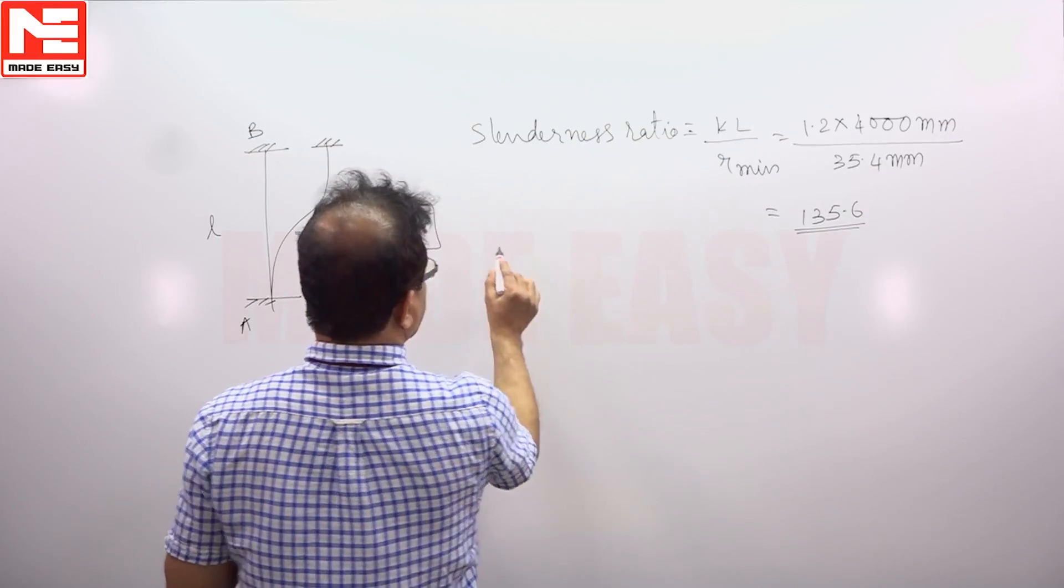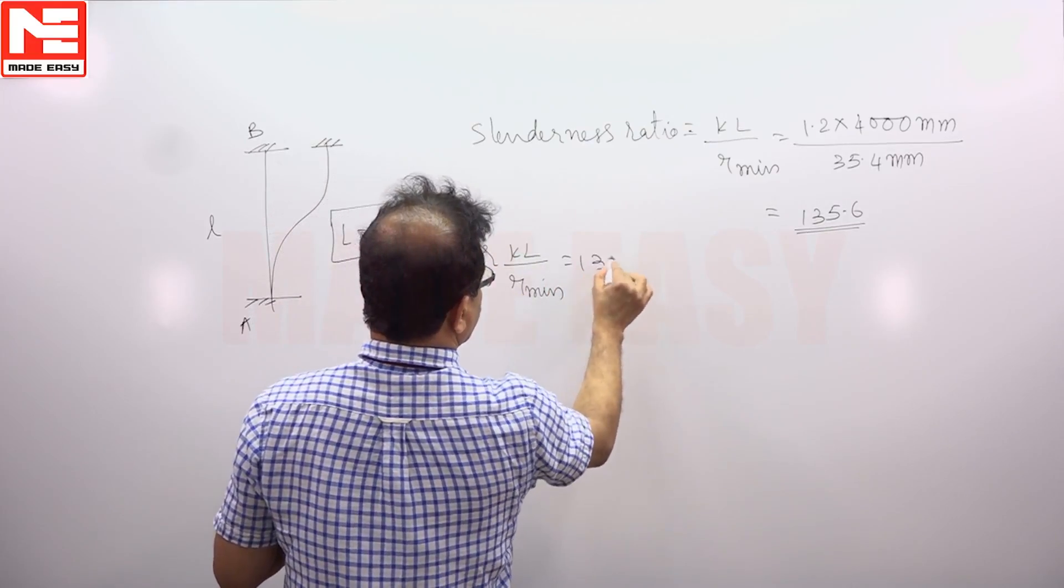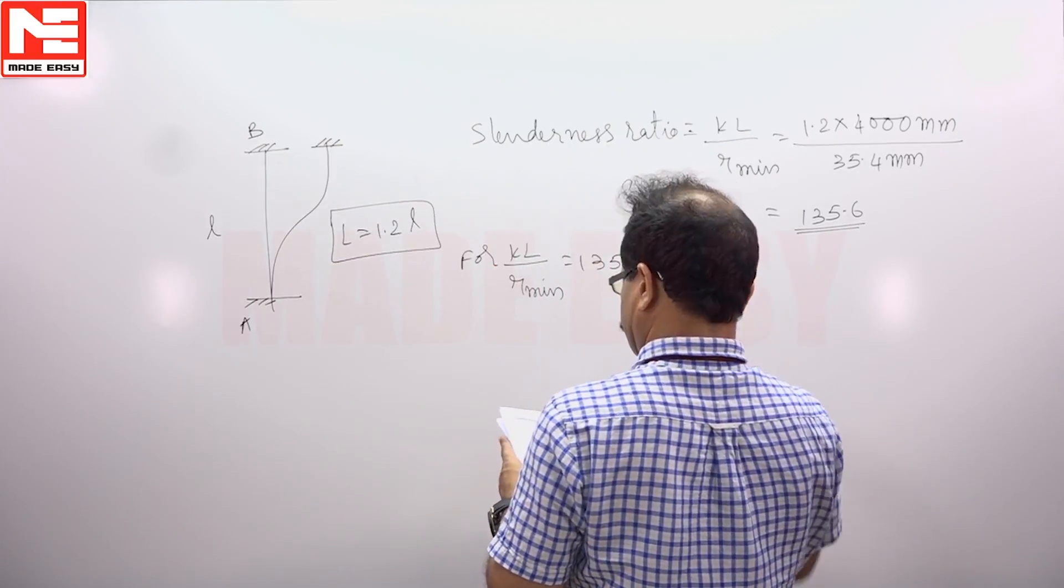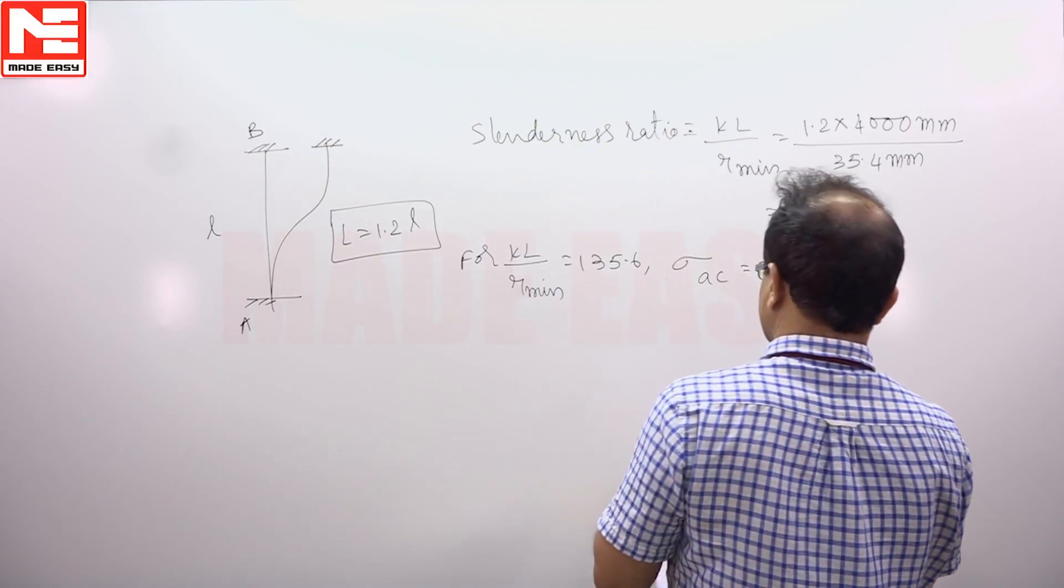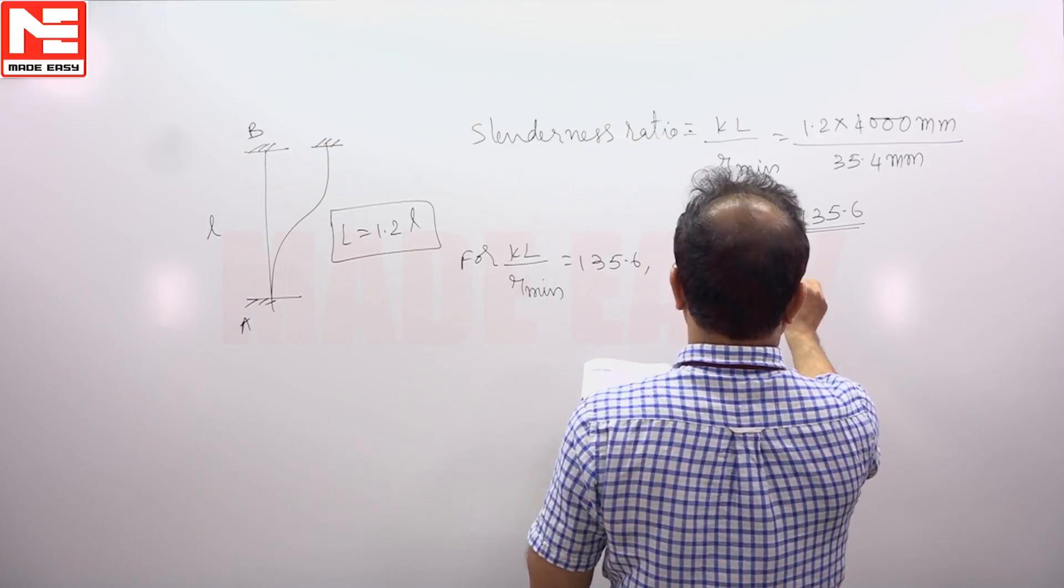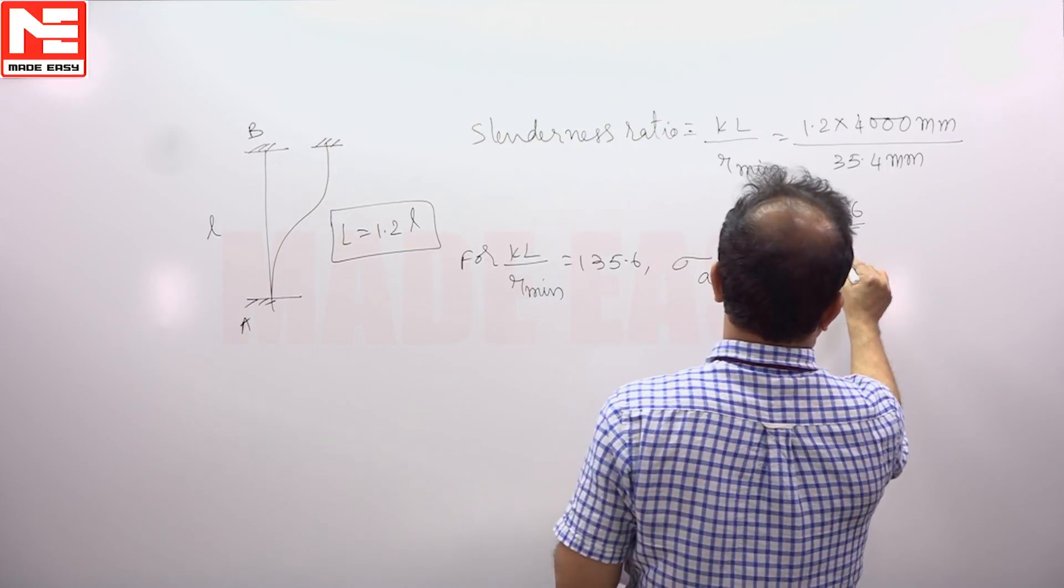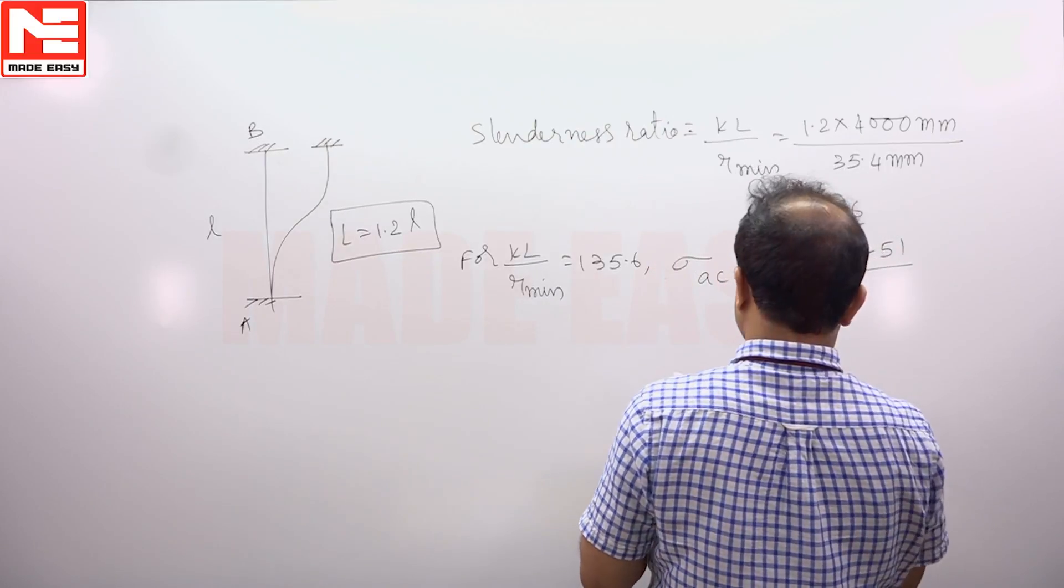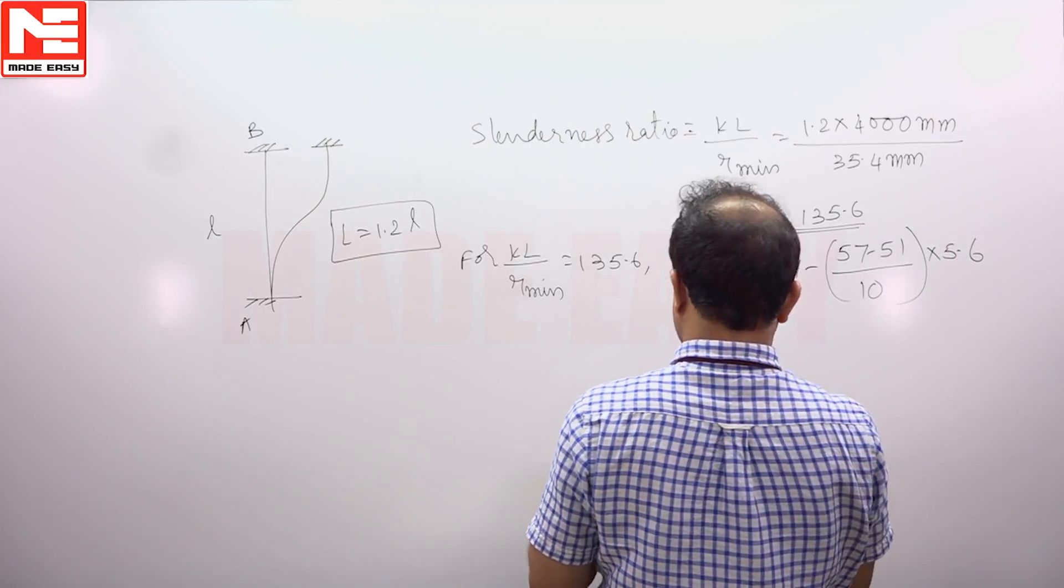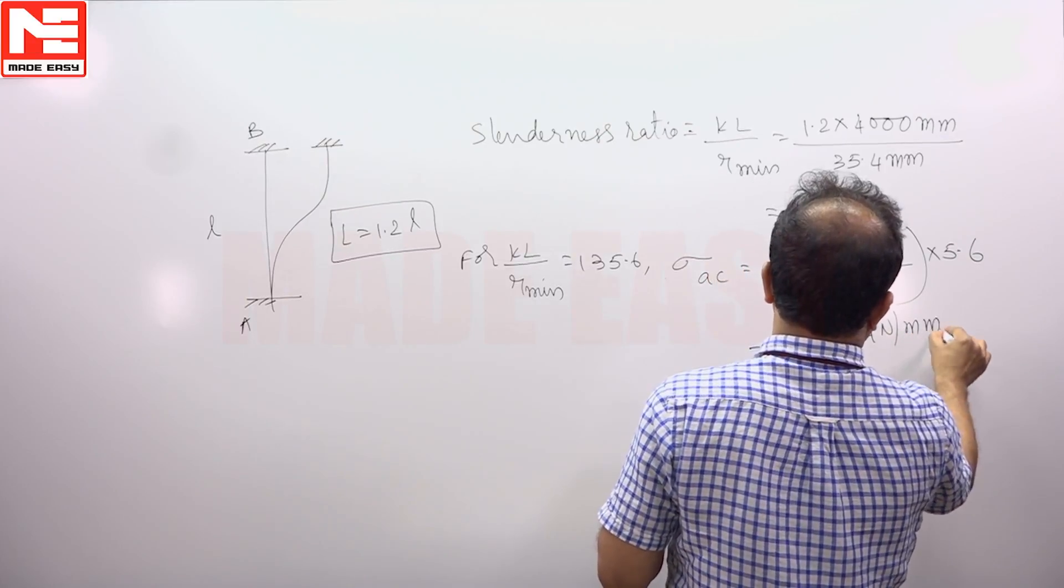From the table for KL by R minimum equal to 135.6, we will get sigma AC permissible compressive stress. For 130 is 57, minus you have to subtract that value 51 by 10 into 5.6, that is the extra one. You will get 53.64 Newtons per mm square.